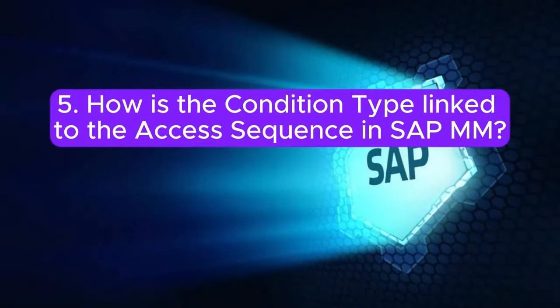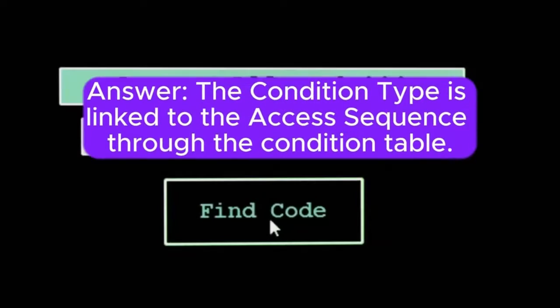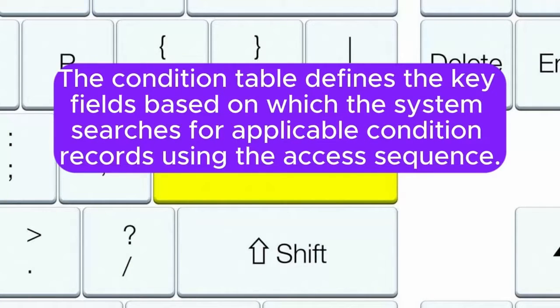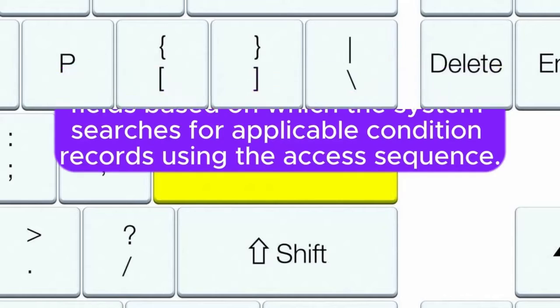Question 5: How is the condition type linked to the access sequence in SAP MM? Answer: The condition type is linked to the access sequence through the condition table. The condition table defines the key fields based on which the system searches for applicable condition records using the access sequence.